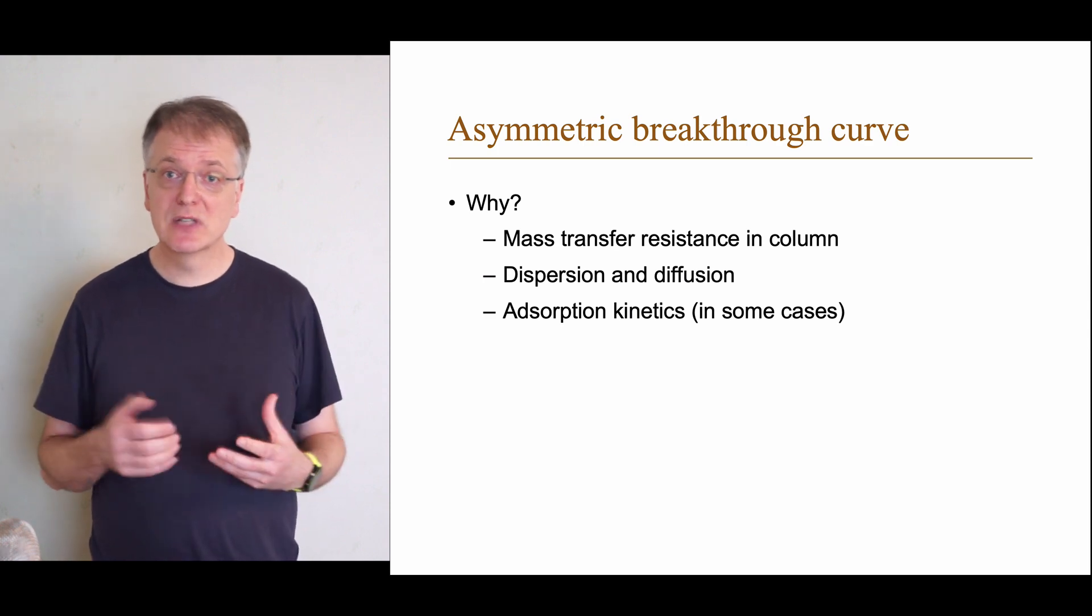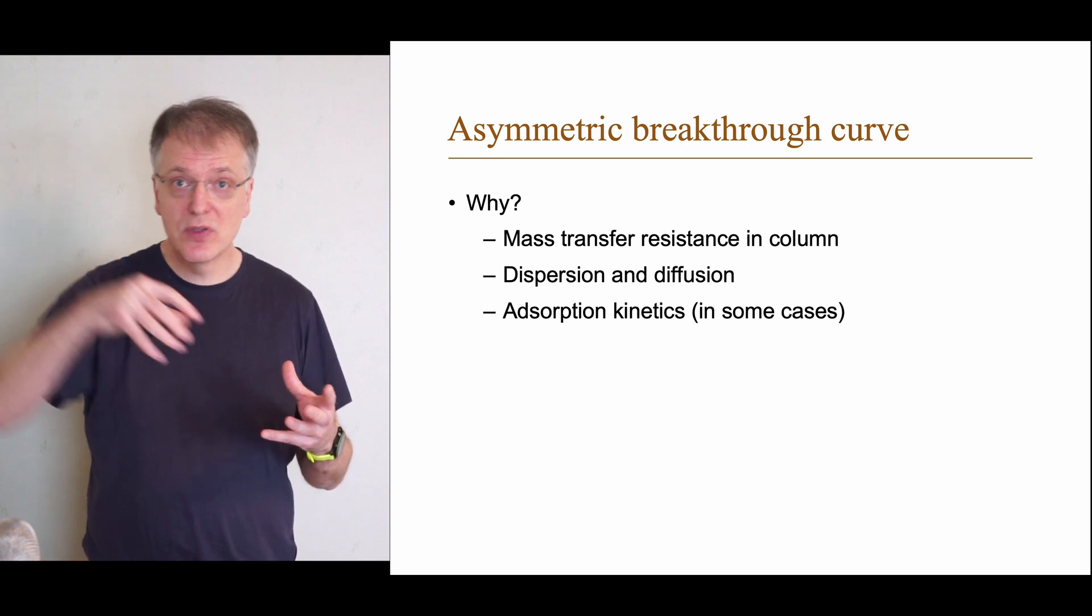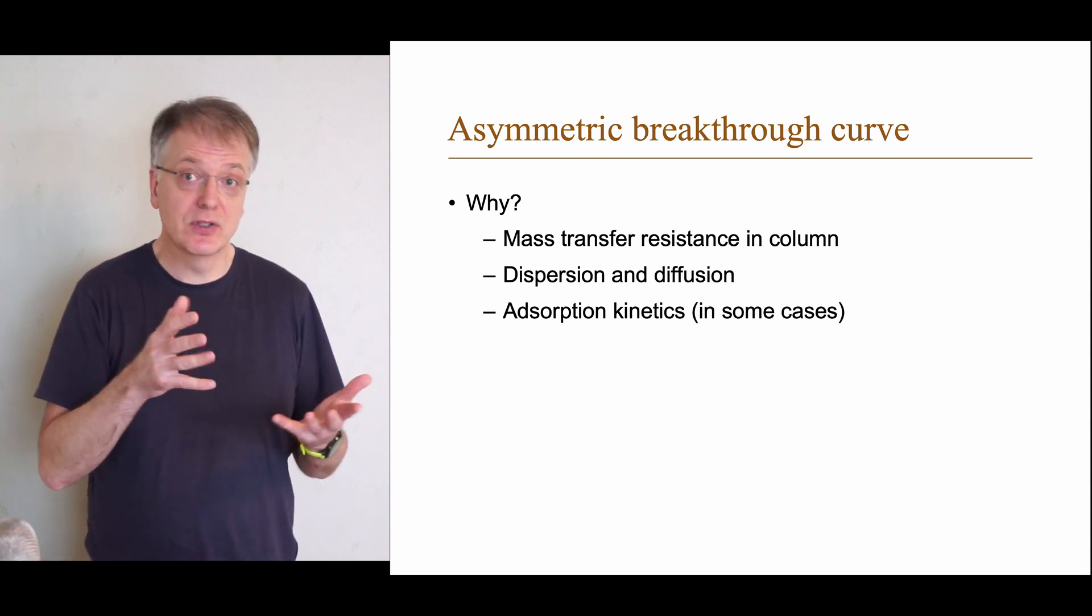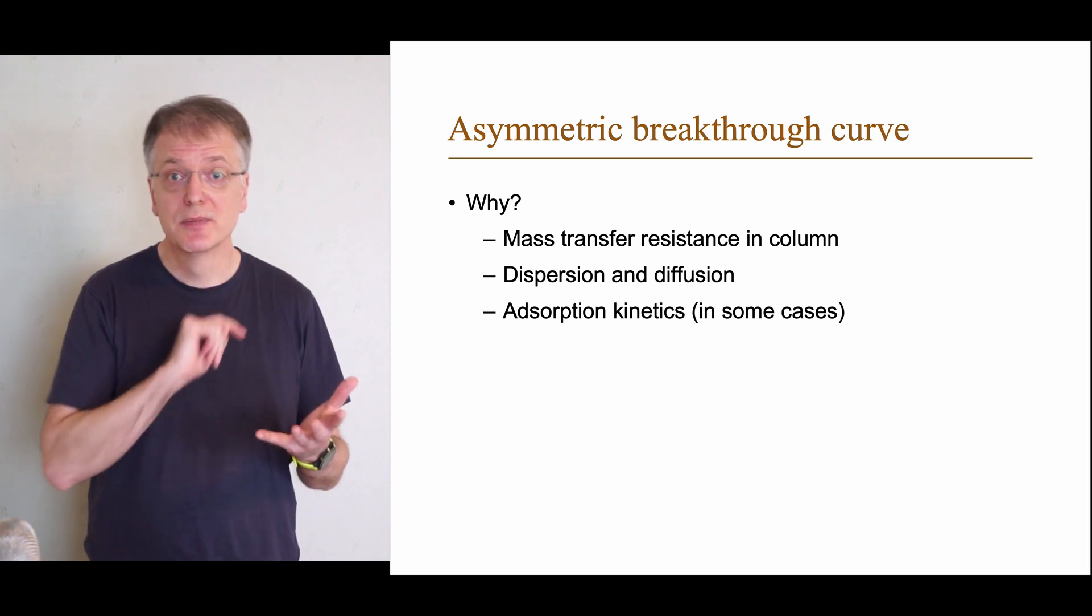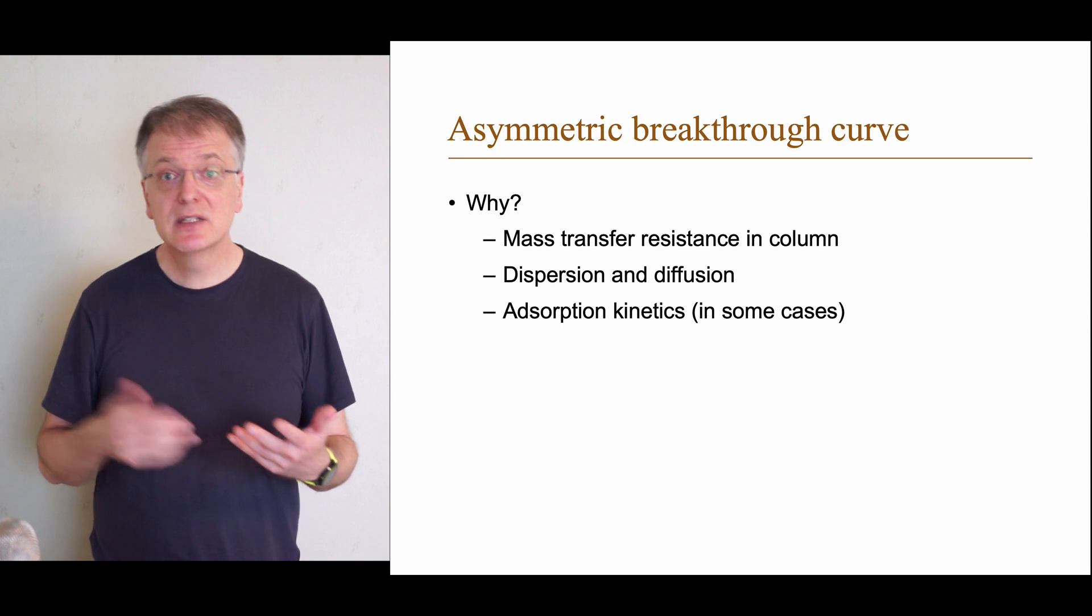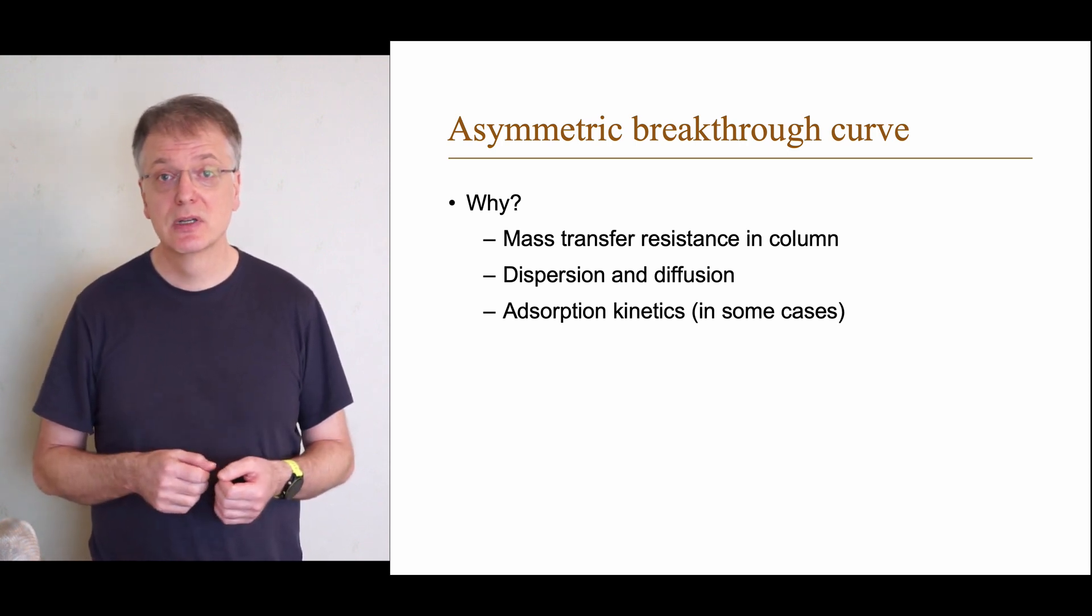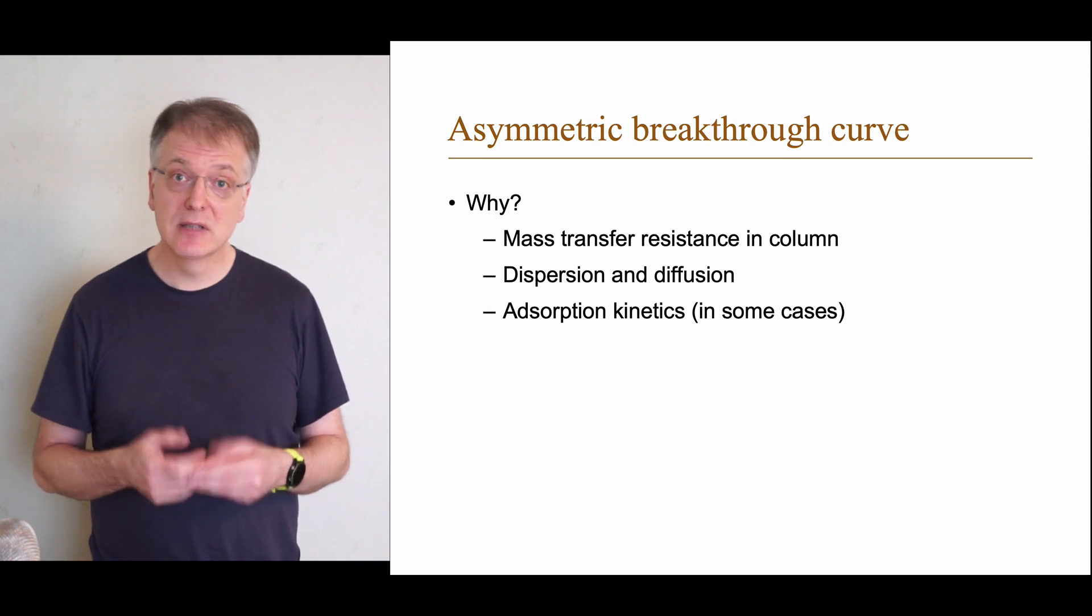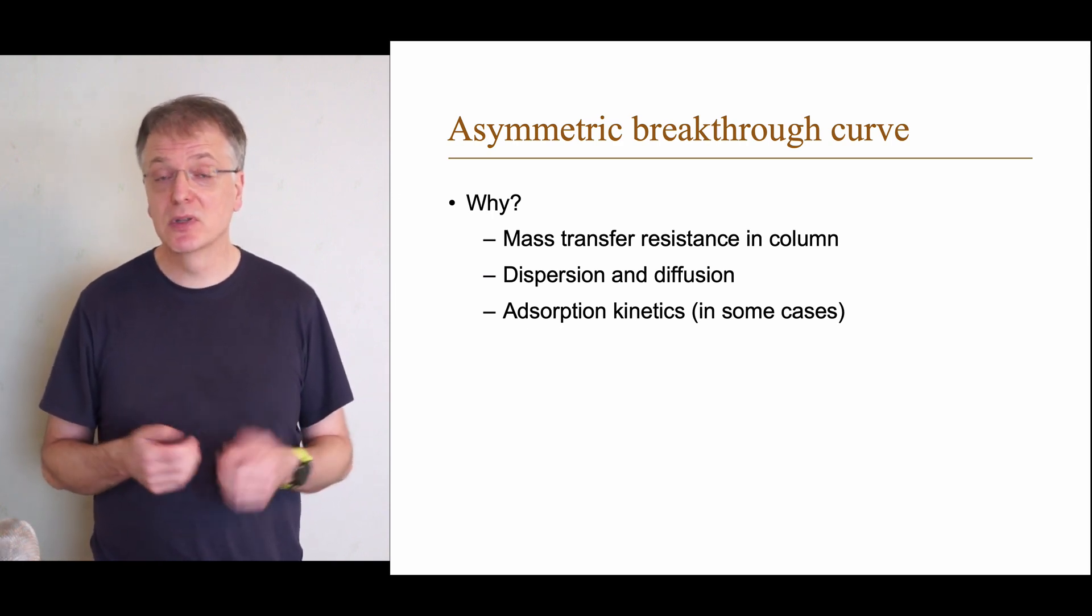Well, there might be mass transfer resistance in the column, meaning that the adsorbate needs to diffuse through a stagnant layer, for example inside the porous material, before being actually adsorbed. Another reason might be due to dispersion and diffusion changing over time, for example due to changes in temperature. And the third reason is that the adsorption process in itself might be too slow.